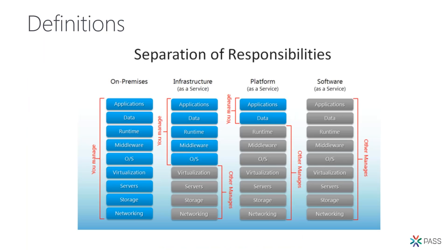Before we dive in, here's the IaaS/PaaS/SaaS chart. When we're talking about on-prem, that's the entire left column — we manage all of it: networking, storage, bare metal, virtualization, operating system, apps, and data. Infrastructure as a service takes the bottom half out, so we're operating system up — we're still patching the OS and maintaining SQL Server if installed. Platform as a service is where you really cross the threshold — we're just managing data and applications, and a cloud vendor handles everything below that.